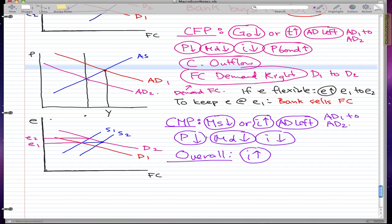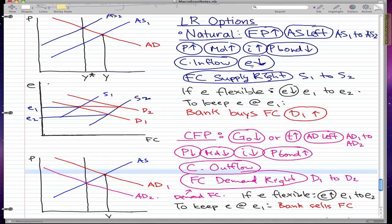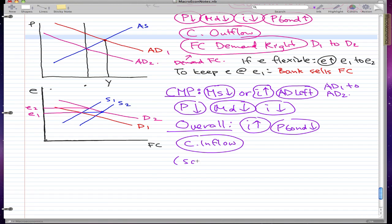The overall effect of CMP is: interest rate goes up because the bank follows CMP, so interest rate goes up and the price of bonds goes down. There's a capital inflow because bond prices are cheap and we want our own domestic bonds. So we're in the same situation as the natural option — capital inflow, exchange rate appreciates, foreign currency supply moves right, and the bank buys that foreign currency to keep the exchange rate at E1. This is the same situation as the natural long run option.